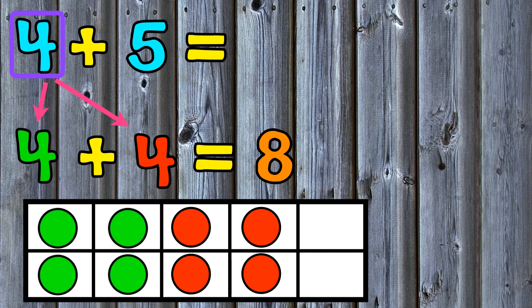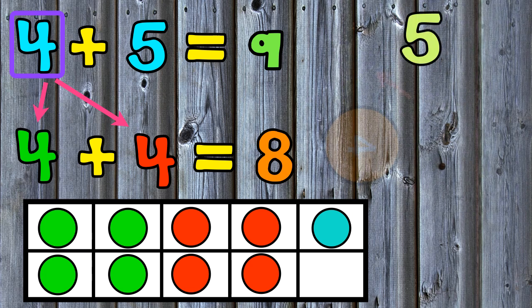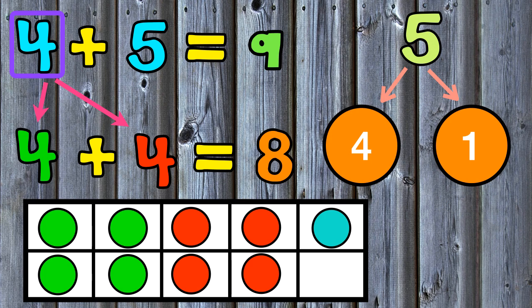The first 4 dots in the 10 frame represent the 4 in the first addend of 4 plus 5. The second set of 4 dots represent part of the addend 5. I need to add one more dot to get to 5. The sum of 4 and 5 is 9 because I added one more dot. You can also see this by breaking apart or decomposing the 5 into 4 and 1 because 4 plus 1 equals 5. So to quickly or fluently add 4 plus 5, we could think of the double fact 4 plus 4 and add one more to give us 9.